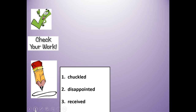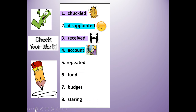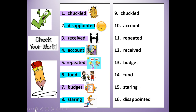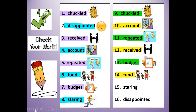So it's time to check your work. Number one: chuckled. Number two: disappointed. Number three: received. Number four: account. Number five: repeated. Number six: fund. Number seven: budget. Number eight: staring. Number nine: chuckled. Number ten: account. Number eleven: repeated. Number twelve: received. Number thirteen: budget. Number fourteen: fund. Number fifteen: staring. Number sixteen: disappointed. If you need more time, push pause, make your changes or corrections, and when you're ready to join me, push play.